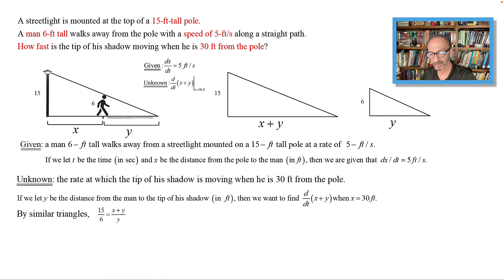Doing the cross product, 15y equals 6 times x plus y, which is 6x plus 6y. Dividing both sides by 3, we get 5y equals 2x plus 2y. Now solving for y, we get 3y equals 2x by subtracting 2y from both sides. Then dividing by 3, we get y equals two-thirds x.